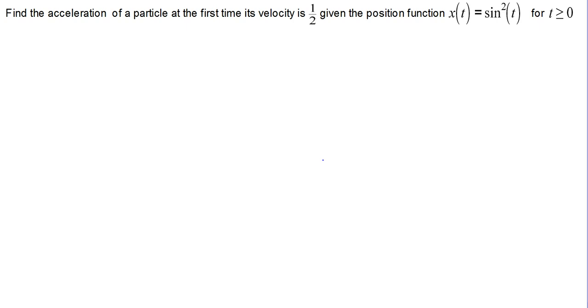In this particle motion problem, we are given a position function x of t equal to sine squared t, and we are looking for the acceleration when its velocity is one-half. So our first step is to figure out at what t value does our velocity equal one-half.